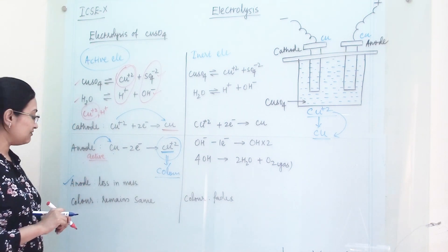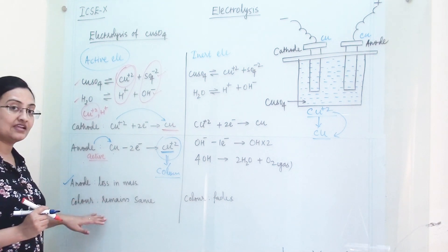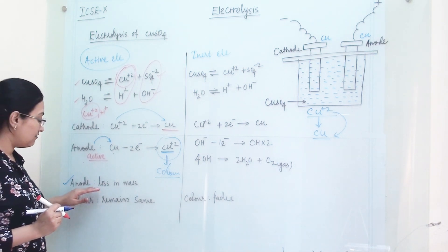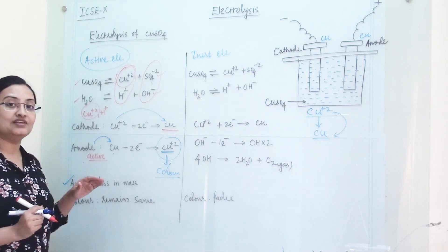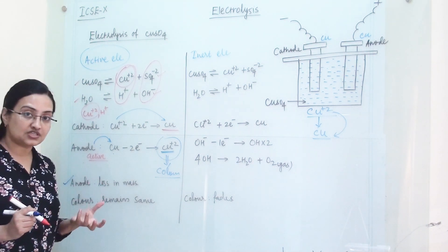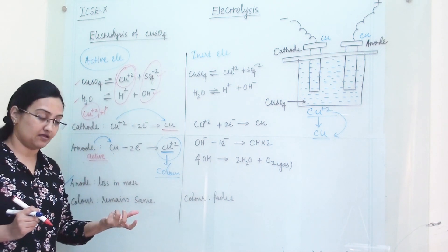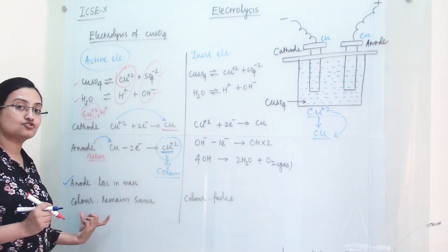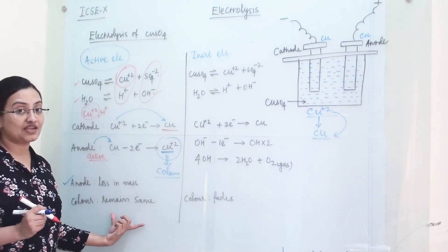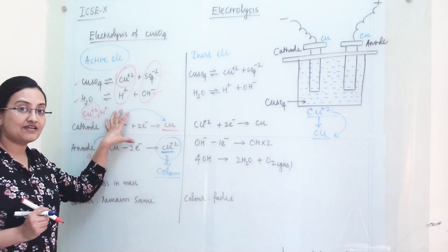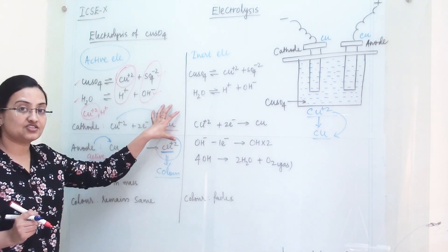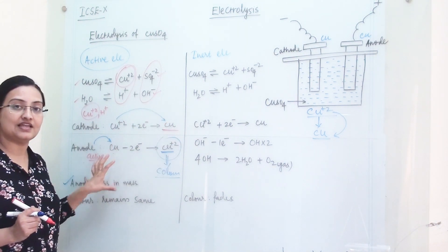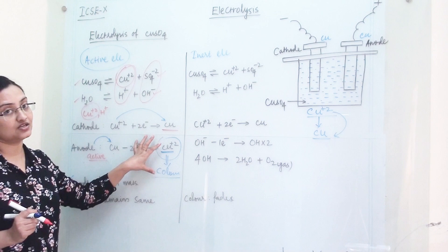So there will be two observations when an active electrode is used: first, the anode will lose some mass because it is giving up ions; and second, the color of the solution will remain the same because as many ions get discharged, the electrode generates that many ions.